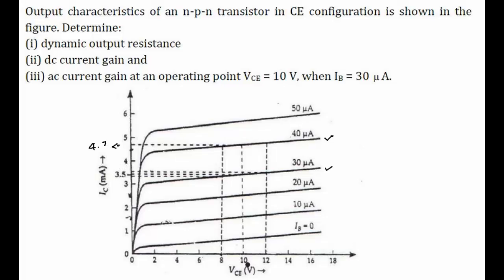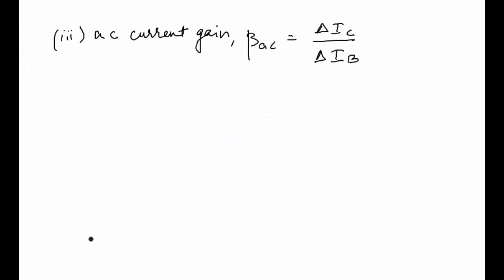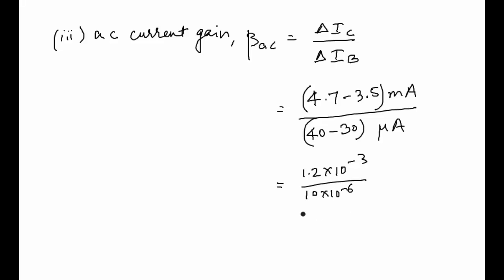That is for a given collector emitter voltage. So here ΔIC is 4.7 minus 3.5 milliamperes and our ΔIB is 40 minus 30 microamperes. So it comes out to be 1.2 into 10 to the power minus 3 upon 10 into 10 to the power minus 6, which is nothing but 120. So this is the answer for our third part.